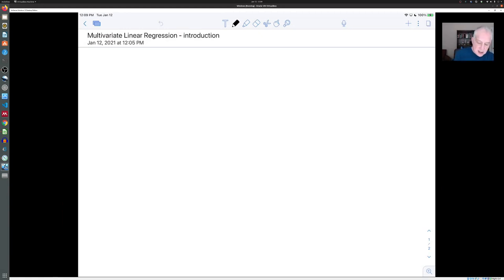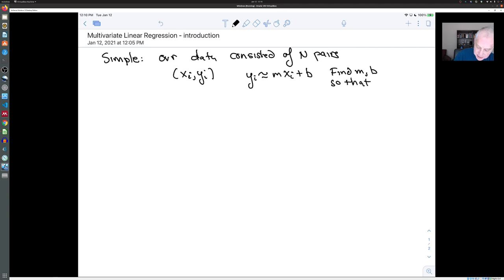In this situation, our data in the simple case consisted of pairs (xi, yi), and we tried to predict yi as being roughly given by m xi plus b. The goal was to find m and b so that this is a good approximation.